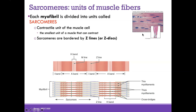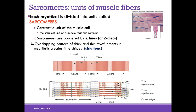Each sarcomere begins and ends with a Z-line or Z-disc — these terms are used interchangeably. The Z-disc is the border of one sarcomere. Within the sarcomere, you see an overlapping pattern of thick and thin filaments. The thin filaments are shown in purple, the thick filaments are the myosin in the middle. Under the microscope, you can see alternating striations of light, dark, light, dark — this is because of the overlapping and non-overlapping pattern of myofilaments.